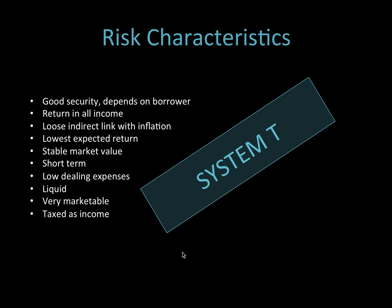When it comes to risk characteristics, remember we used that acronym called System T — that's the security, the yield, the spread, the tax, the expenses, and so on. Risk characteristics of money: it's good security, although that depends on the borrower. If you lend money to the bank, they're likely to pay you back, though not always. Return is always an income — you don't get capital appreciation. It has a loose indirect link with inflation, so if inflation is high you might lose the value of the money. But in general, we have quite a low expected return because the risk is quite low.